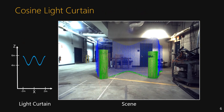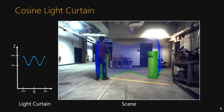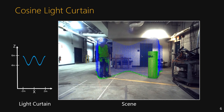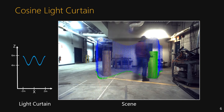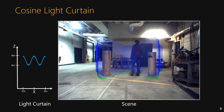Here the device was configured to image a cosine shaped light curtain. The light curtain surface is rendered in blue and the detections are rendered in green. You can see that as the tubes are rearranged, the person is detected when he crosses the curtain and the tubes are not detected when they're moved.